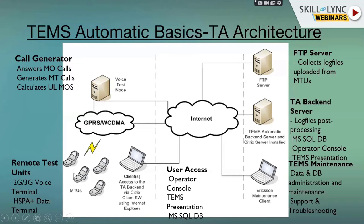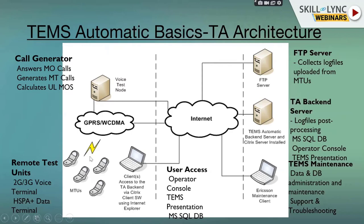For voice calls, you also need a voice test node. For an origination call, the call has to be terminated somewhere — the voice test node is a fixed number you call, which provides an automated ringtone or plays a song. The back-end server helps with data collection, and you have the mobiles, the laptop, the internet, the voice test node, and the FTP server. All you really need is mobiles, a laptop installed with TEMS software, the back-end TEMS server, and the FTP server where the collected data accumulates.